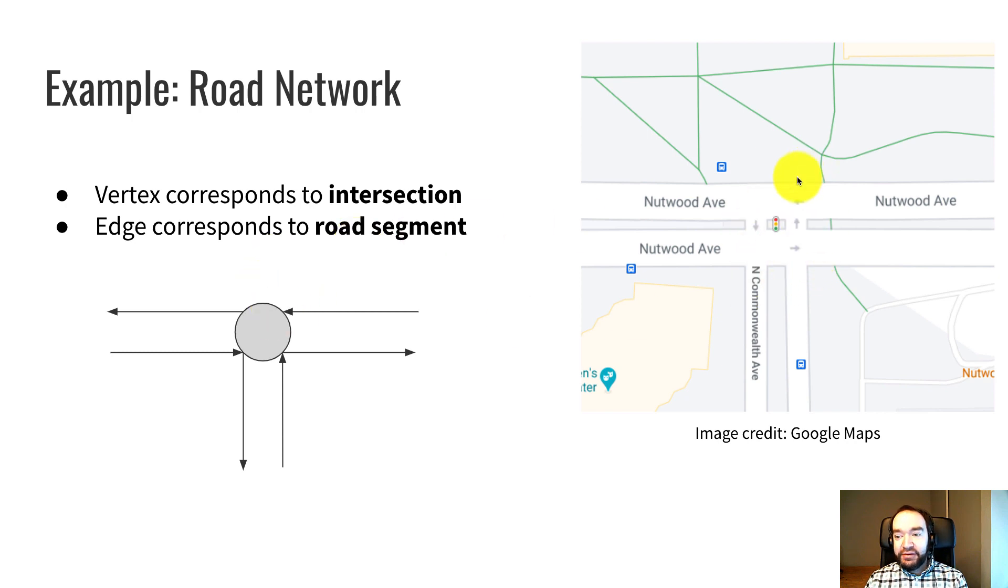So if we wanted to create a graph data structure that models this stretch of road here, this is an intersection on the border of CSUF's campus. This is Commonwealth Avenue going north-south and Nutwood Avenue going east-west. So the intersection in the middle here would be modeled as a vertex because that's where multiple roads meet. And each segment of road coming in or out of that intersection would correspond to one of these edges.